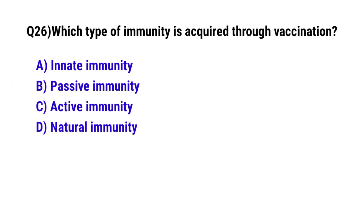Question number 26. Which type of immunity is acquired through vaccination? The correct option is C: active immunity.